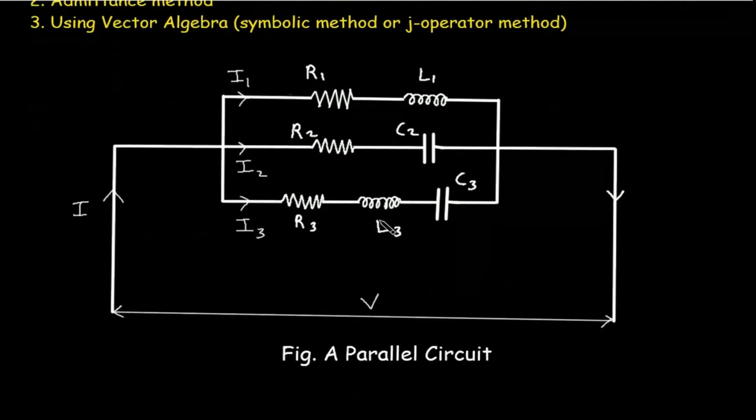Here is an example of a parallel circuit. This R and this L are connected in series, so this is Branch 1.